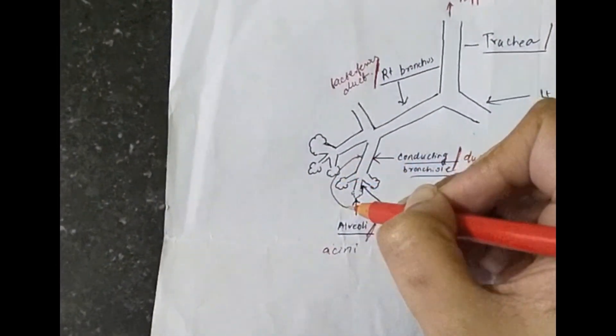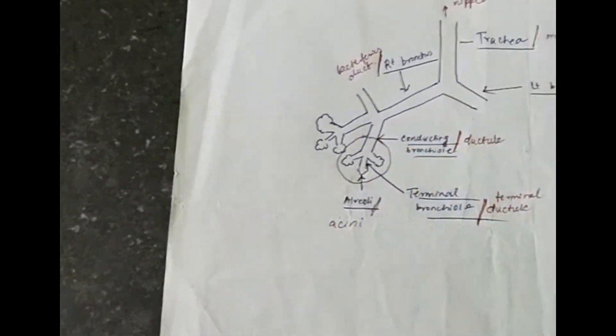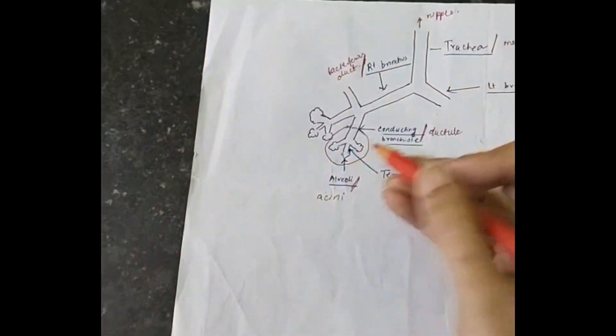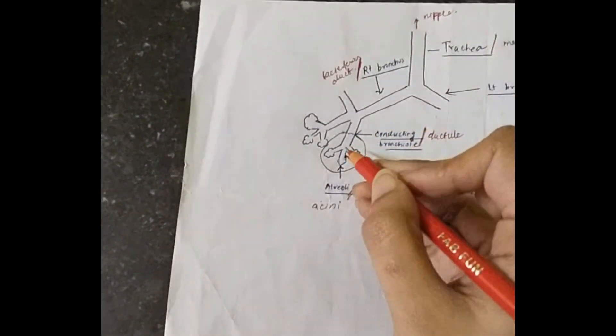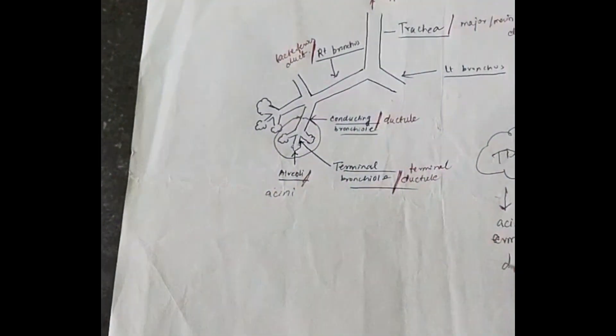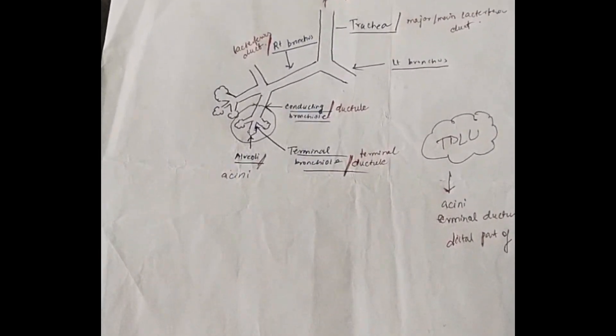So what is TDLU? That is terminal ductule lobular unit. So this thing is called as the TDLU. TDLU comprises of the acini. See acini. There is a terminal ductule and there is the distal part of the ductule. This forms the one TDLU.